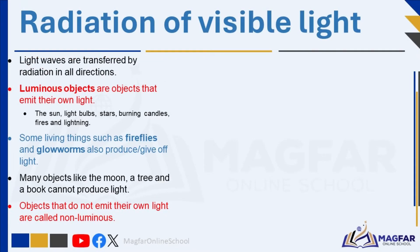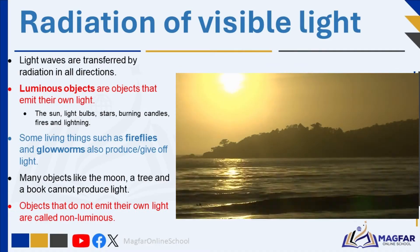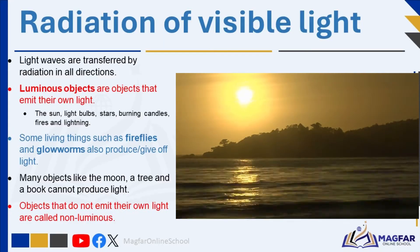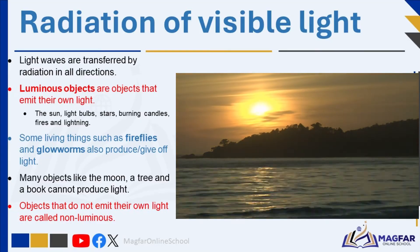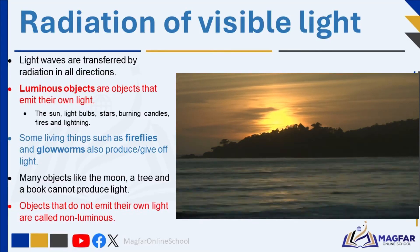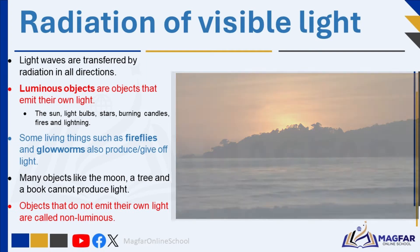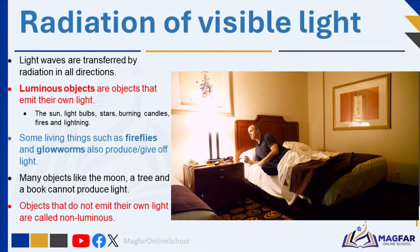Let us move on and talk about visible light in more detail. Visible light, which we simply refer to as light, is emitted from luminous objects such as the sun and light bulbs, and is transferred by radiation. Light waves radiate in all directions from a luminous source, which is why when you turn on the light, the entire room becomes illuminated.